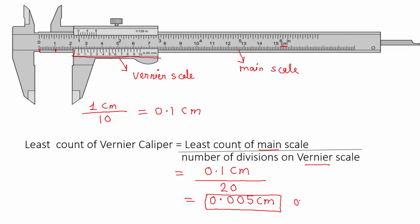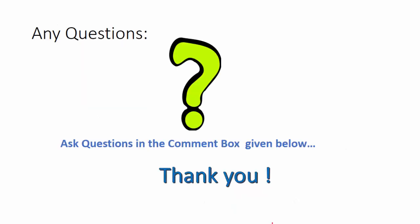You can also convert this value into millimeters. Since 1 centimeter equals 10 millimeters, multiply 0.005 centimeter by 10 to get 0.05 millimeter. I hope you understand least count now. If you have any questions, please ask in the comment box below. Thank you.